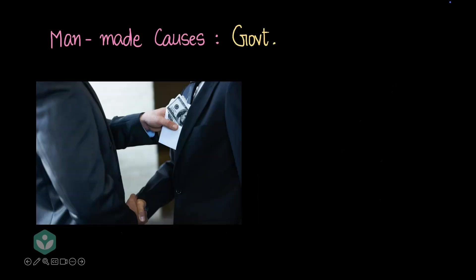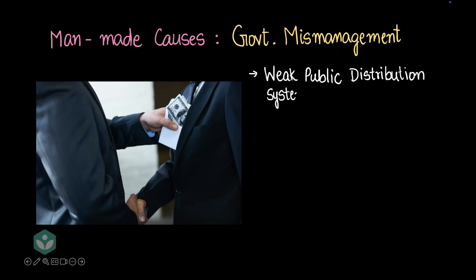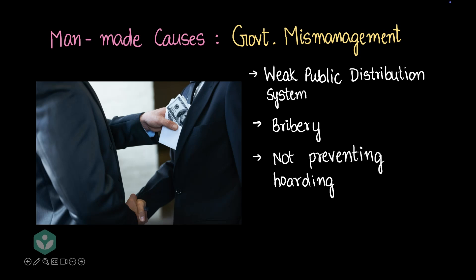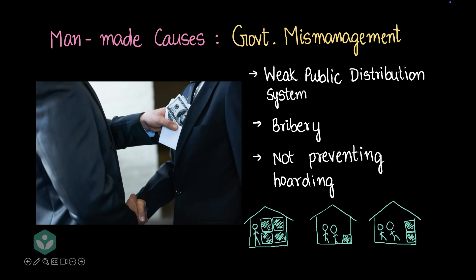The next man-made cause is government mismanagement. A weak public distribution system for food grain can cause a famine. Bribery can cause shortages of food in certain areas. Not preventing hoarding is another factor — if one person has a lot of food and does not sell or give it to others, that can cause a famine. The North Korea 1994 famine has been attributed to government mismanagement.